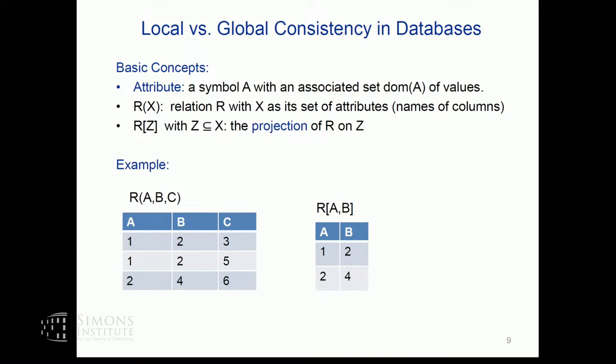Let me provide some background from database theory. Basic concepts: relations have a set of attributes. We write R(X) to indicate the relation whose set of attributes — the names of its columns — is the set X. We write R[Z], where Z is a subset of X, to indicate the projection of R on the attributes of the set Z. Here is an example of taking the projection of the relation R(A, B, C) on the attributes A and B.